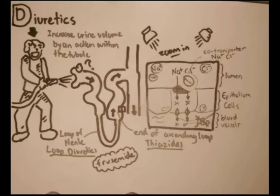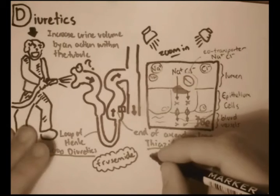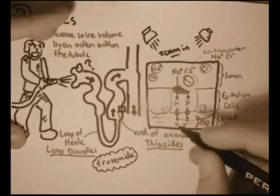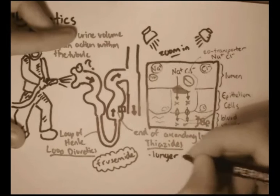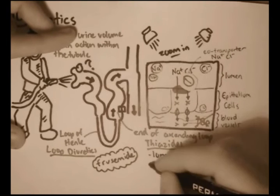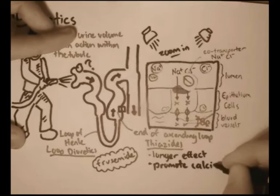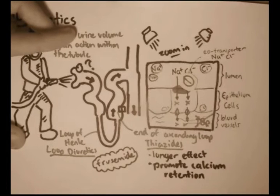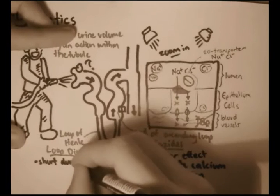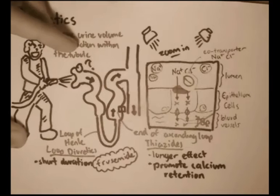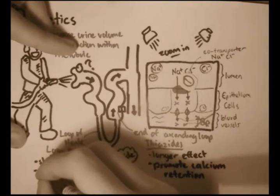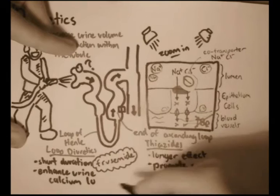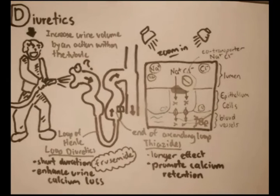And so what is the difference between thiazides and the loop diuretics is that thiazide has a longer effect and it promotes calcium retention. So it absorbs calcium from the tubule. Loop diuretics, on the other hand, has a short duration and it enhances the urine calcium loss.